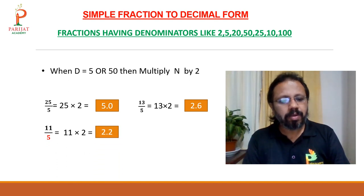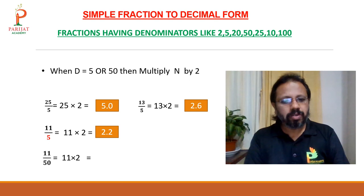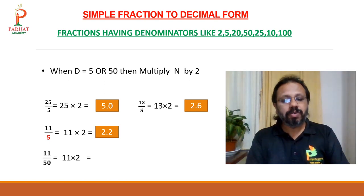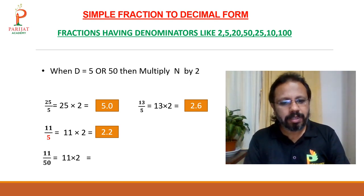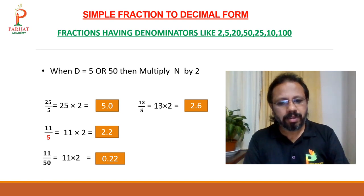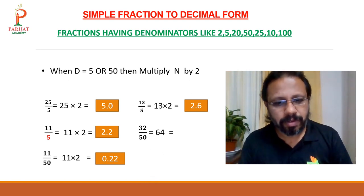11 upon 50: multiply 11 by 2 to get 22. Since 50 is a double digit denominator, leave the last 2 digits and give the decimal — answer is 0.22. 32 upon 50: 32 times 2 is 64 — answer is 0.64.